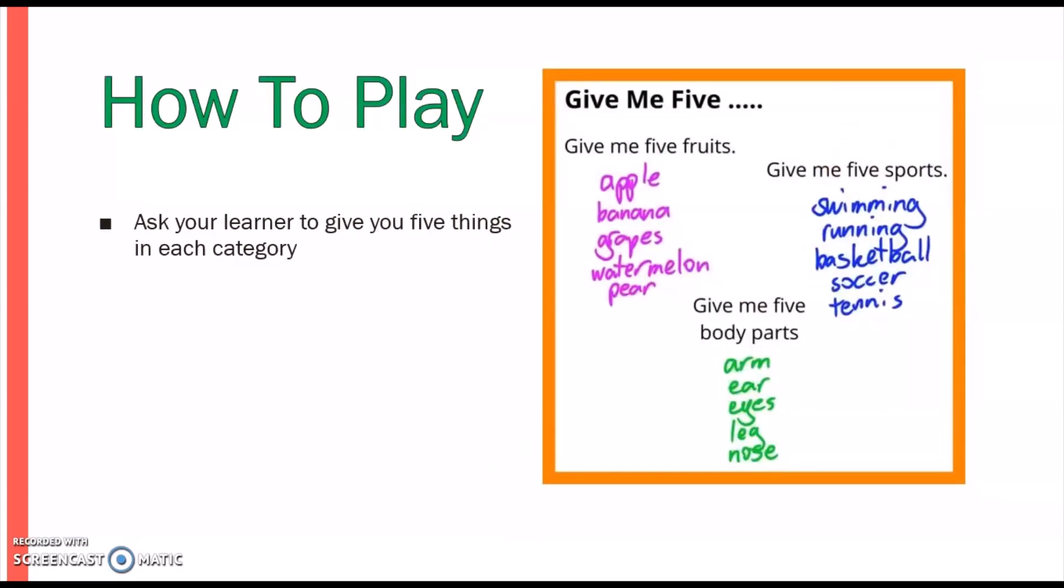To play, you'll ask your learner to give you five things in each category. So you might ask them to give me five fruits, five sports, and five body parts.